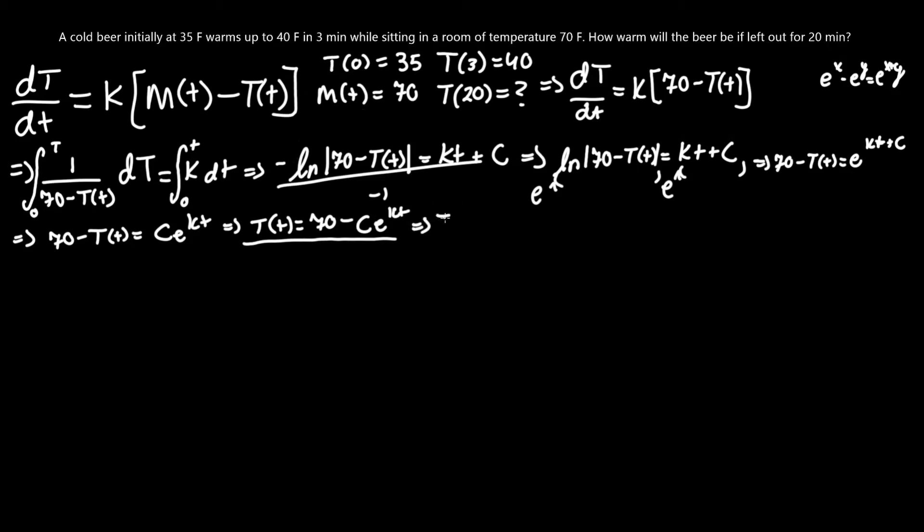Let's plug that in. T(0) equals 35, which equals 70, just whatever is in this function, minus c e. And since it's time t equals 0, this just becomes k times 0, which is c e to the 0, which becomes 1. Therefore, we can actually subtract 70 from 35, which becomes negative 35 equals negative c. Divide by negative 1, you get c equals 35. There, we found our first constant.